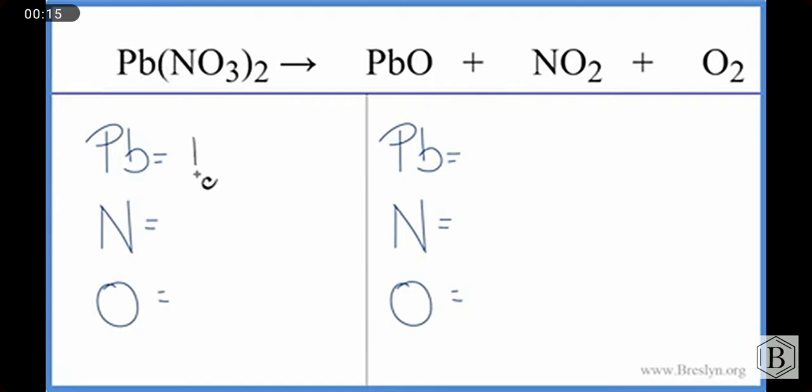So first, we have one lead, and the two means we have two of these nitrate ions. So we have two times the one, two nitrogens, two times the three, six oxygens.